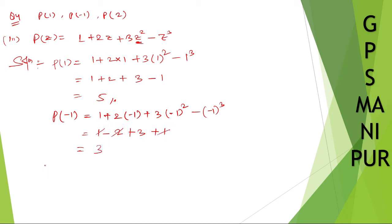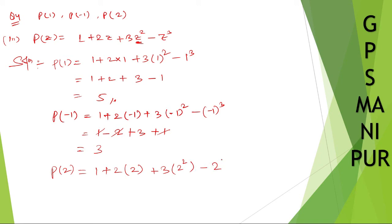Now let me find out p of 2. What is p of 2? So 1 plus 2 into 2 — instead of z put 2 — plus 3 into 2 squared, minus 2 cubed. So 1 plus 4 plus 3 into 4 minus 8, that is 1 plus 4 plus 12 minus 8.